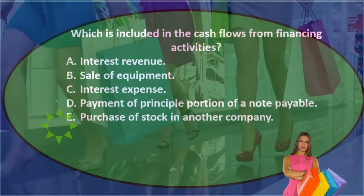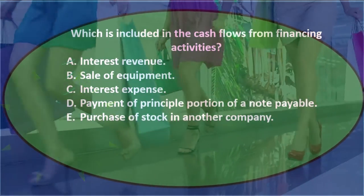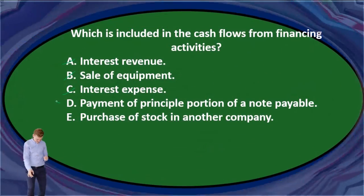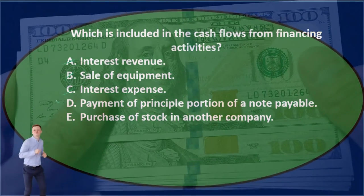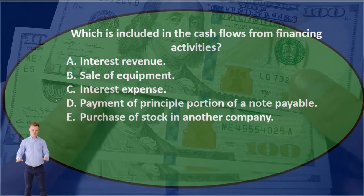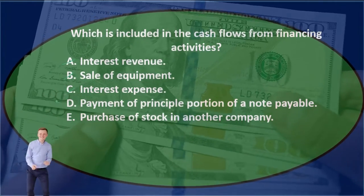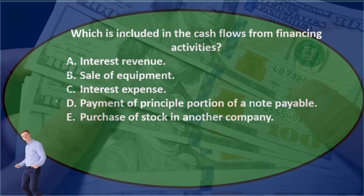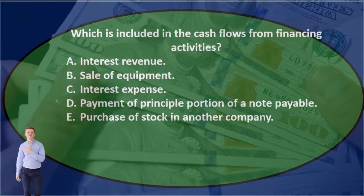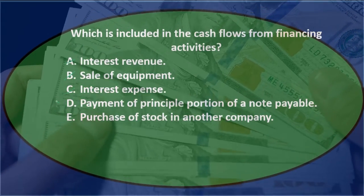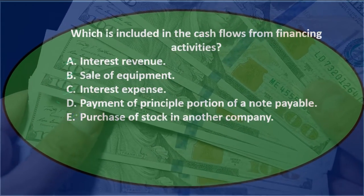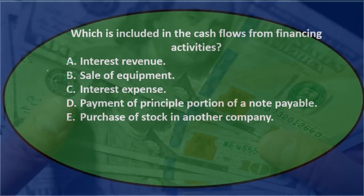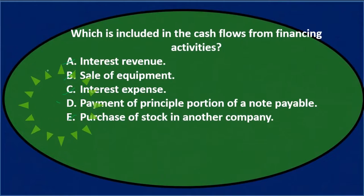E) purchase of stock in another company — the journal entry would be debit an investment in stocks and credit cash. These aren't stocks we're issuing, which might be financing; we're buying stocks like a normal investor, debiting an asset and crediting cash — that's an investing activity. So final answer: which is included in cash flows from financing activities? D) payment of principal portion of a note payable.